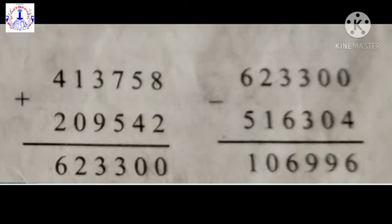This is the first operation we have done, that is the addition operation. Then, from whatever answer we got — 6,23,300 — we subtract 5,16,304, and we get the answer 1,6,996. Here you can see 2 operations are done: addition and subtraction. That's why we call it mixed examples.